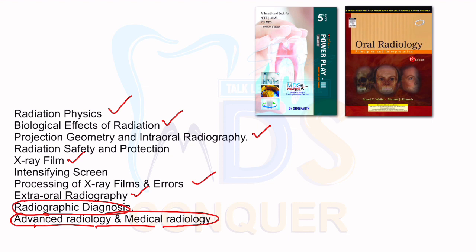Keeping in mind the upcoming trends in the examination — if you see the trend from previous exams to 2020 or 2021 — there are lots of questions moving towards things commonly used in clinical scenarios. So I strongly recommend adding one more star to topics like projection geometry, radiographic films, processing errors, extraoral radiography, and radiographic diagnosis. I'll keep more stars for advanced radiology and medical-related radiology, where MCQ books are less filled with relevant MCQs. Right now you cannot only rely on MCQ books to get a decent rank because most MCQ books are missing the advanced updates currently used in clinical scenarios.